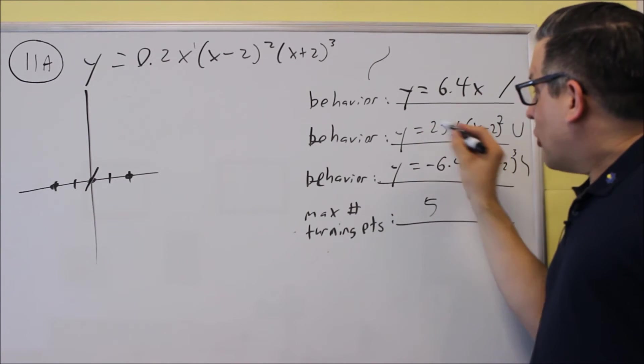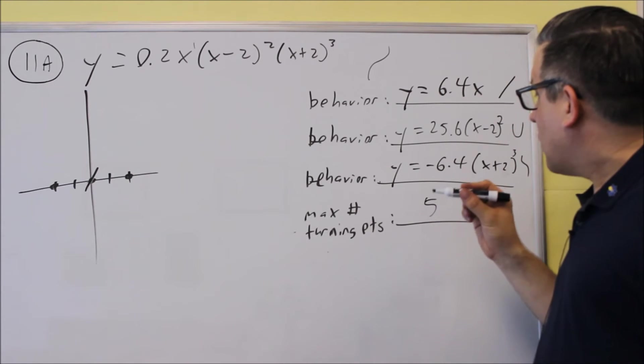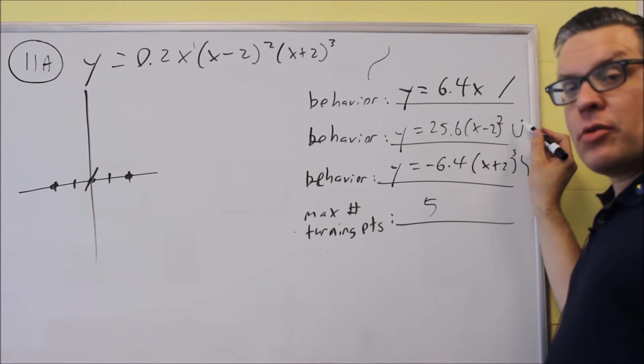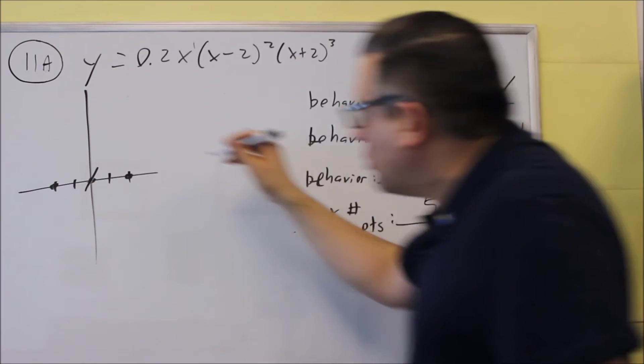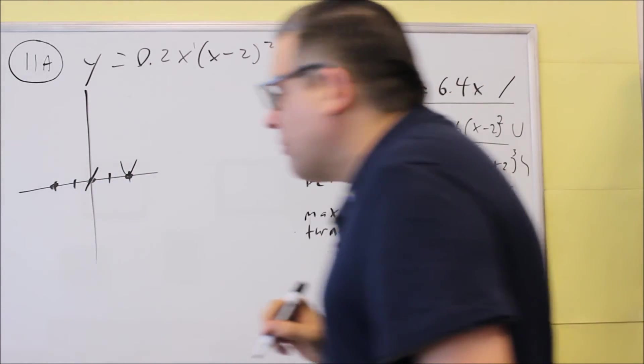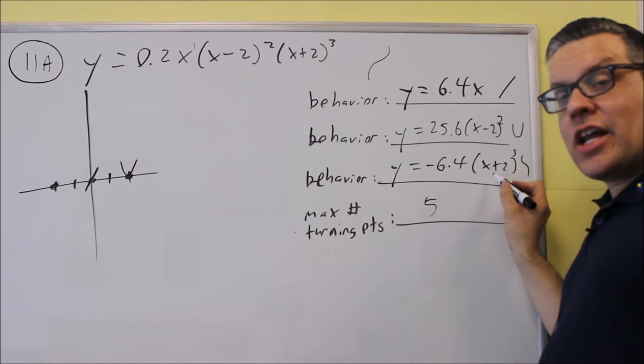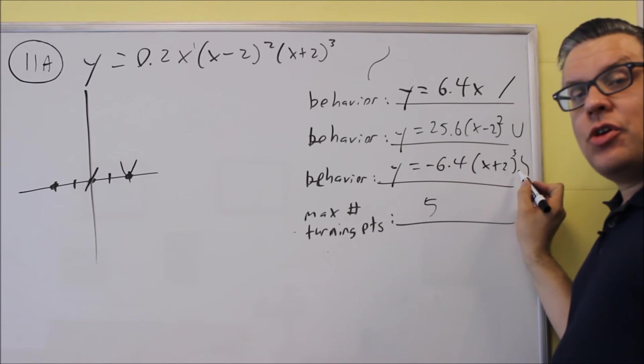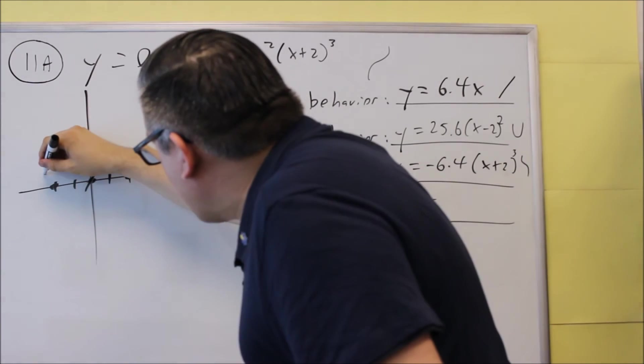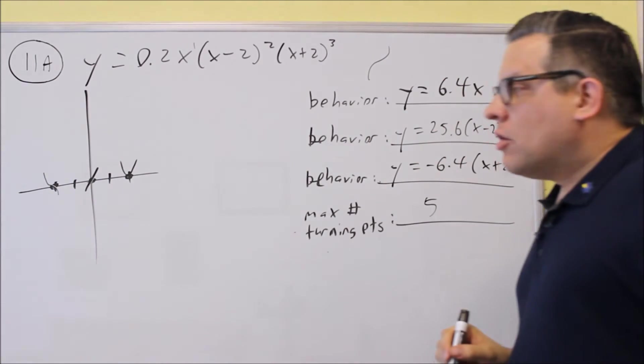The next one we had was the behavior at 2. So behavior at 2 was a parabola shape that's opening up. So I'm going to draw that one right here. Then the behavior at negative 2 looks like this negative cube graph. So I'll draw that little sketch in right there.